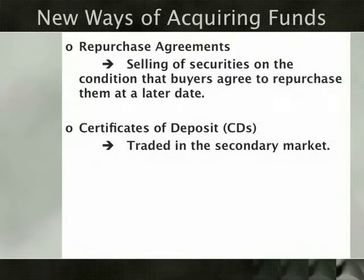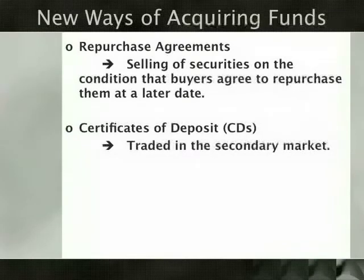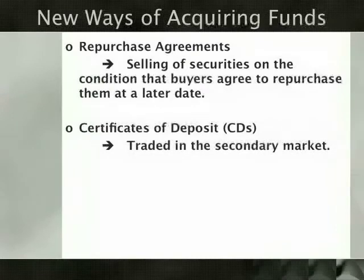The traditional asset management approach to banking is based on the assumption that a bank's liabilities are both relatively stable and unmarketable. Historically, each bank relied on a market for its deposit IOUs that was influenced by the bank's location, meaning any changes in the extent of the market were beyond a bank's immediate control. In the 1960s and 1970s, this assumption had to be abandoned. The change first occurred in the United States where rising interest rates, together with regulations limiting the interest rates banks could pay, made it extremely difficult for banks to attract and maintain their deposits.